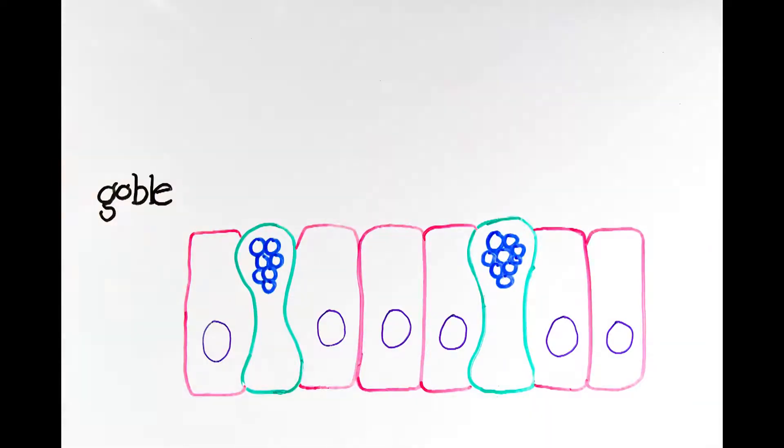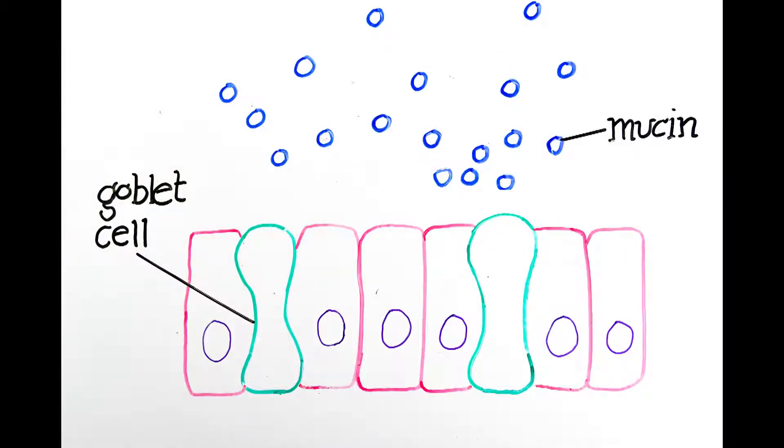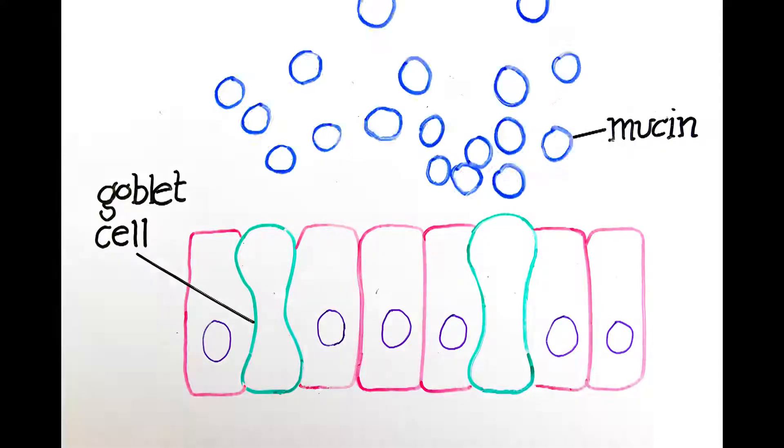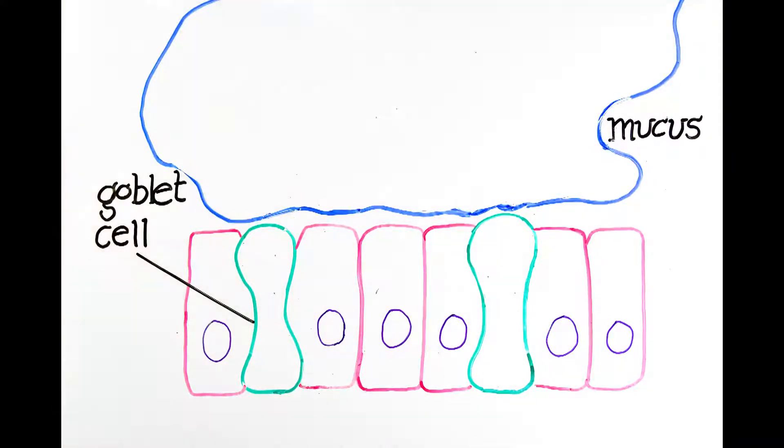Slugs are covered in goblet cells, which secrete a type of protein known as mucin in the form of dry granules. When exposed to water in the environment, these mucins can expand to over 100 times their initial volume, forming mucus.